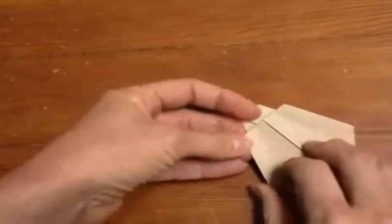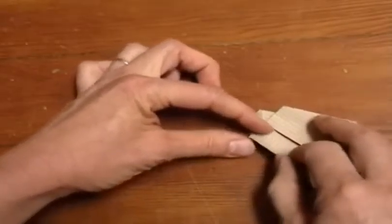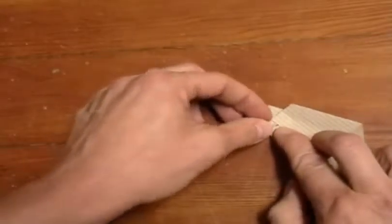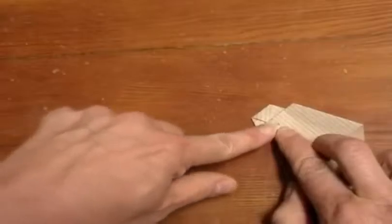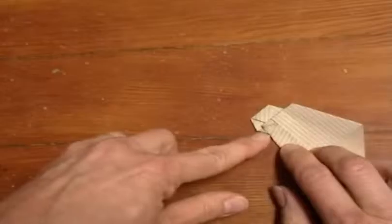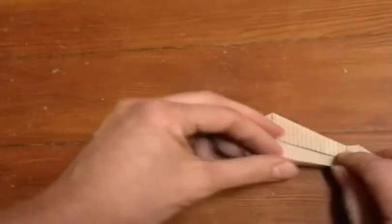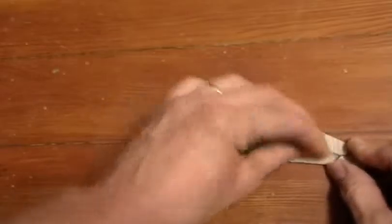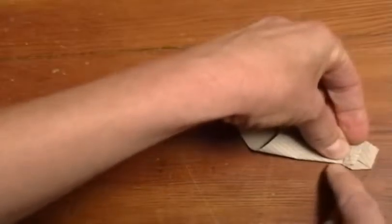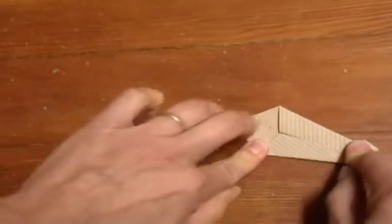Now you fold this edge into the center line, and this edge into the center line. And this kind of puckers, press it down, and it will make a little angle on the tie knot right there. Do the same to the other side. Make a little pucker, and crease it so you've got a nice knot for the tie.